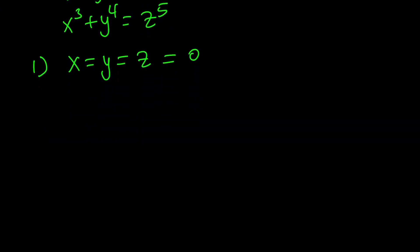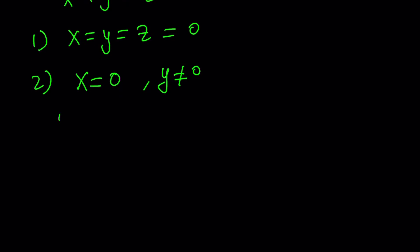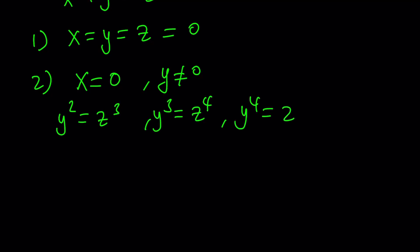Let's go ahead and take a look at the second case. The second case is going to limit some variables. We're using x equals zero, but this time we want y to be non-zero, and we're going to see what happens to z. If x is zero, then we get: y squared equals z cubed, y cubed equals z to the fourth, and y to the fourth equals z to the fifth.